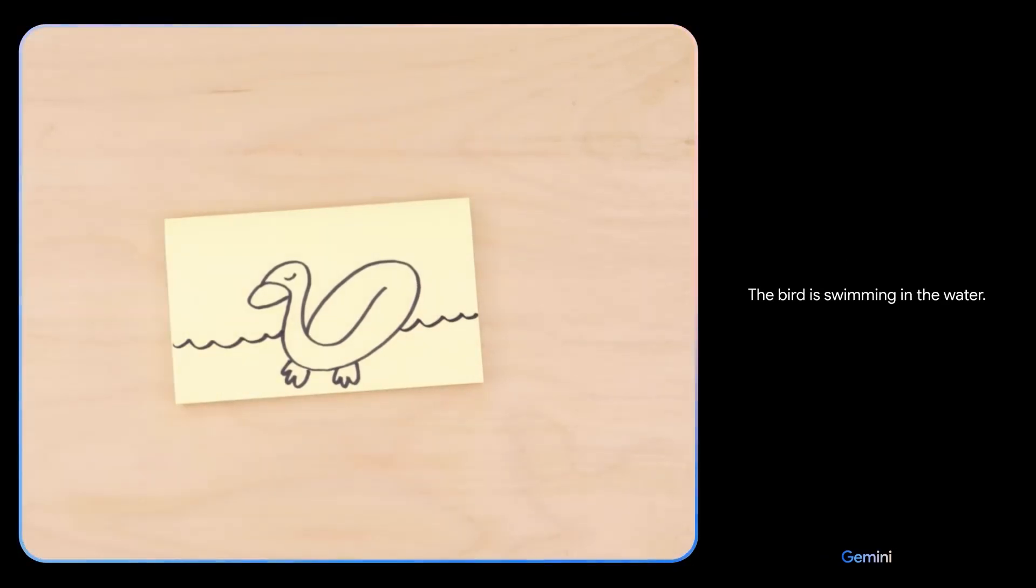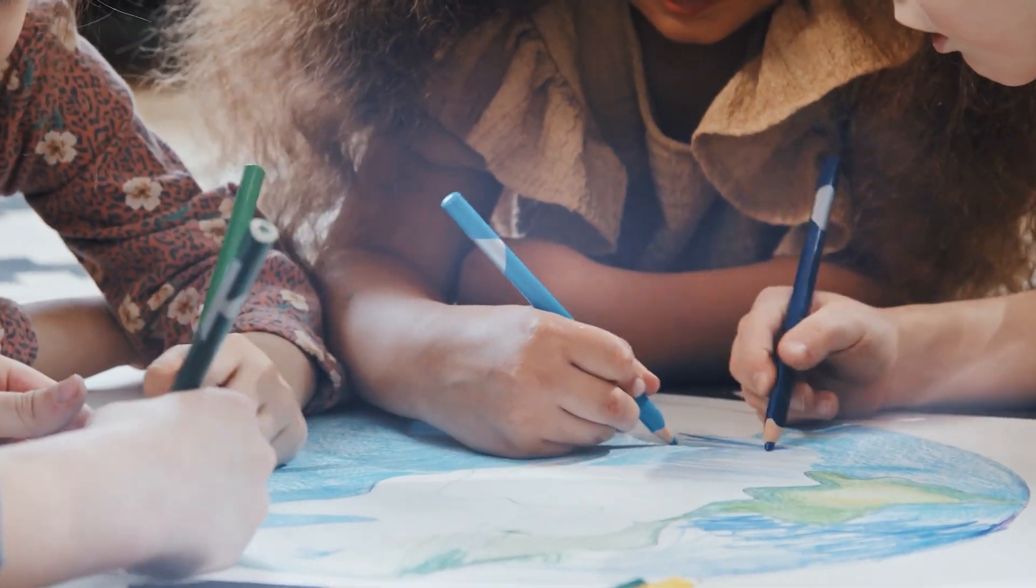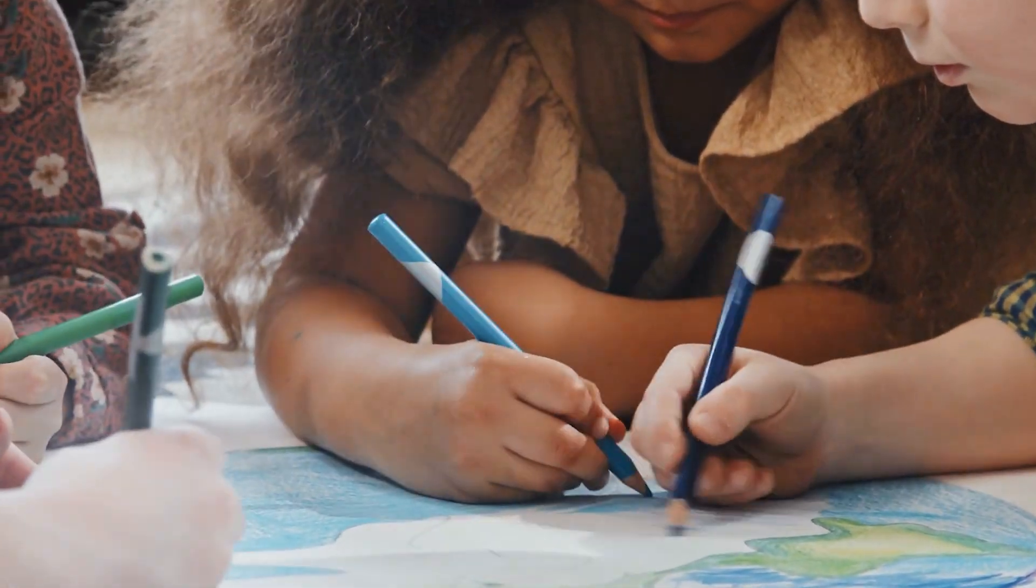The bird is swimming in the water. It has a long neck and beak. It is a duck. This shows how Gemini could be used in interactive learning tools for kids, where it helps them understand their drawings.